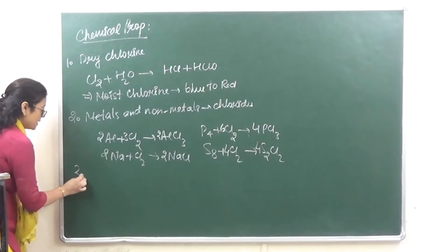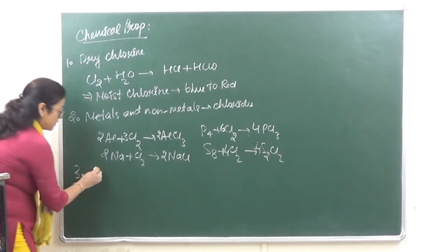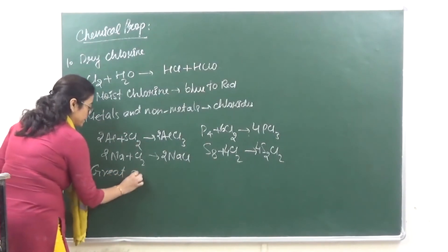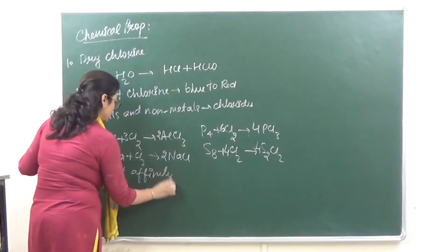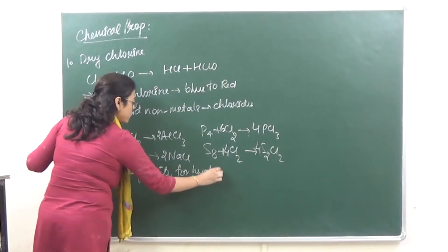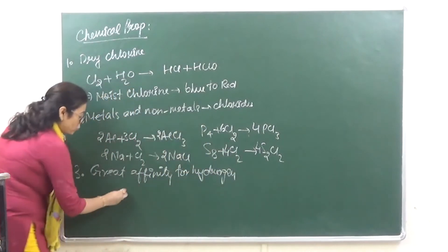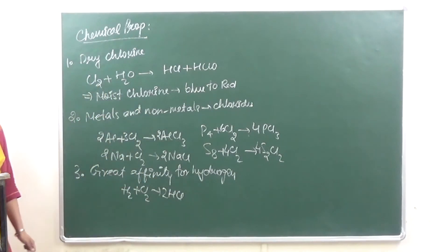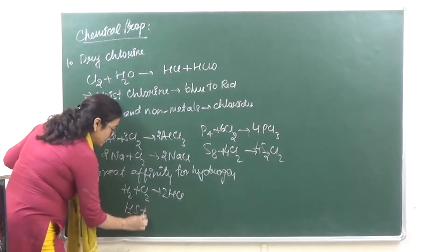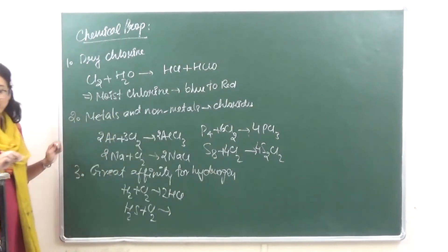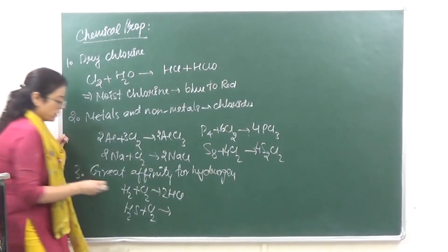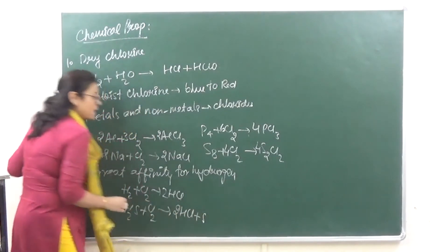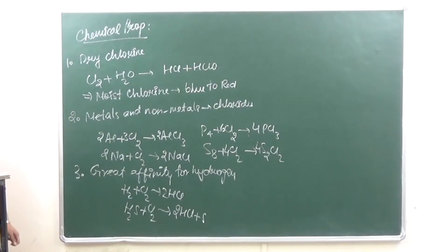Number three: Chlorine has a great affinity for hydrogen. For example, H2 plus Cl2 gives 2HCl. Similarly, if it reacts with hydrogen sulfide (H2S), it gives HCl plus sulfur. This shows that chlorine can easily abstract hydrogen.